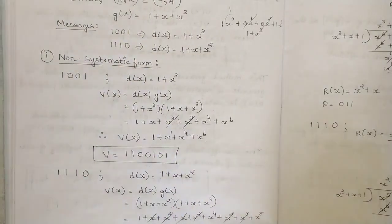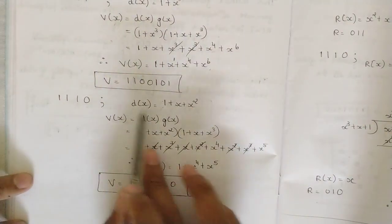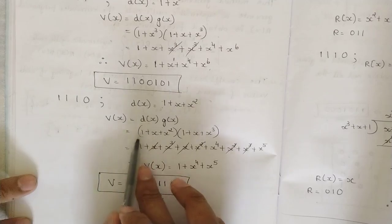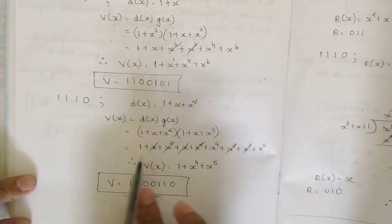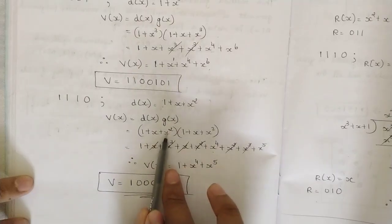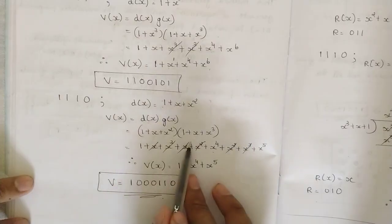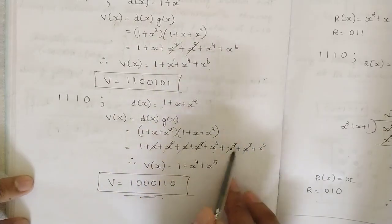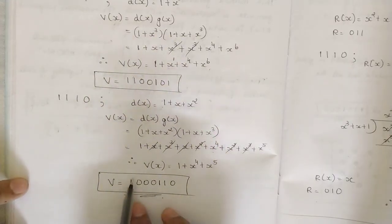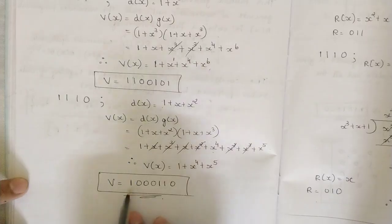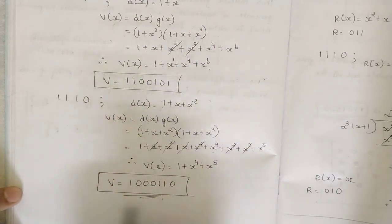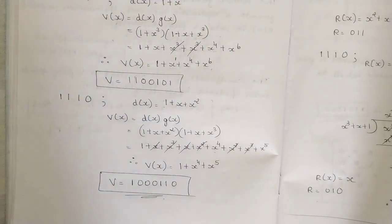For the second message 1110, d(x) = 1+x+x². Then v(x) = (1+x+x²)(1+x+x³). Multiplying out: 1+x+x³ + x+x²+x⁴ + x²+x³+x⁵. Terms x, x, x², x², x³, x³ each appear twice and cancel, leaving v(x) = 1+x⁴+x⁵. In bit form: position 0 is 1, positions 1,2,3 are 0, positions 4 and 5 are 1, position 6 is 0 — giving 7-bit code vector 1000110.